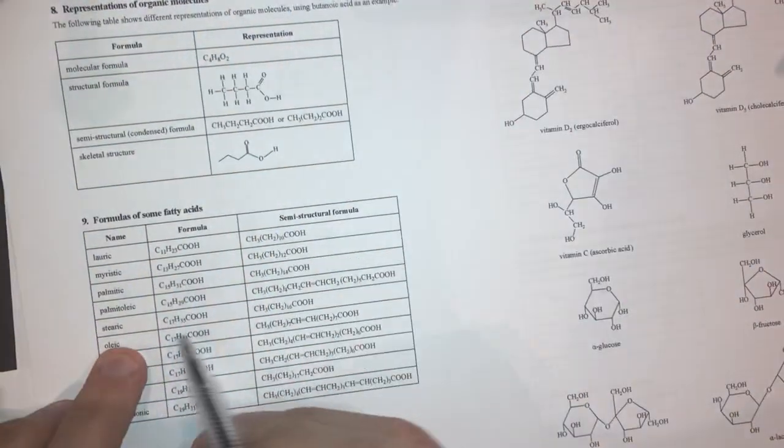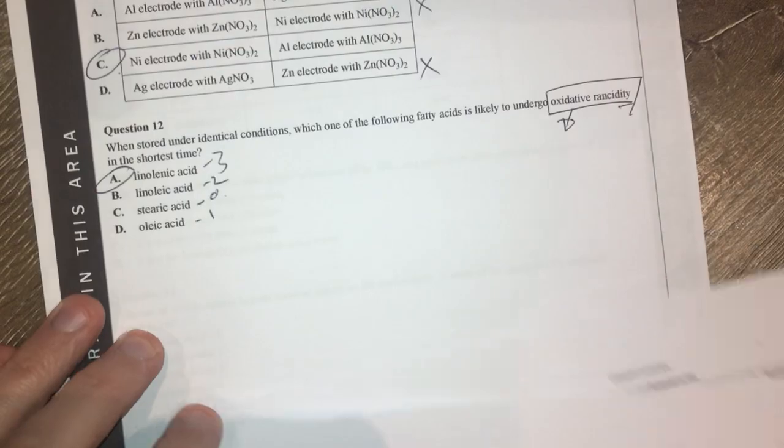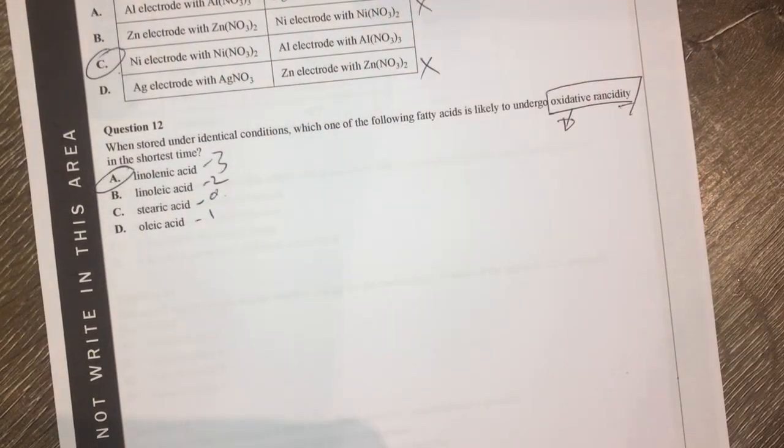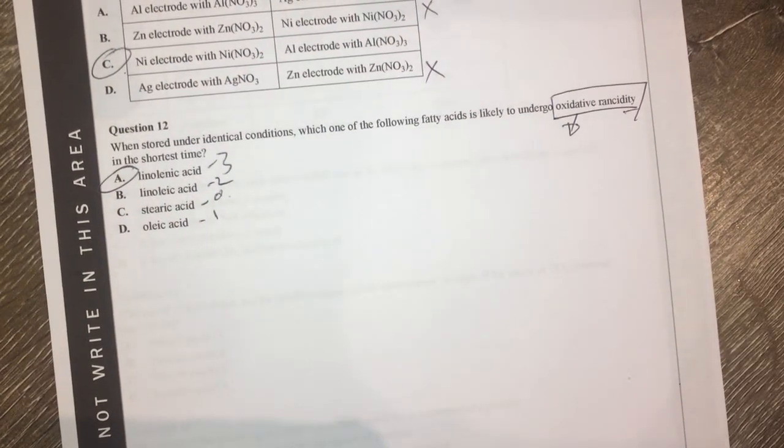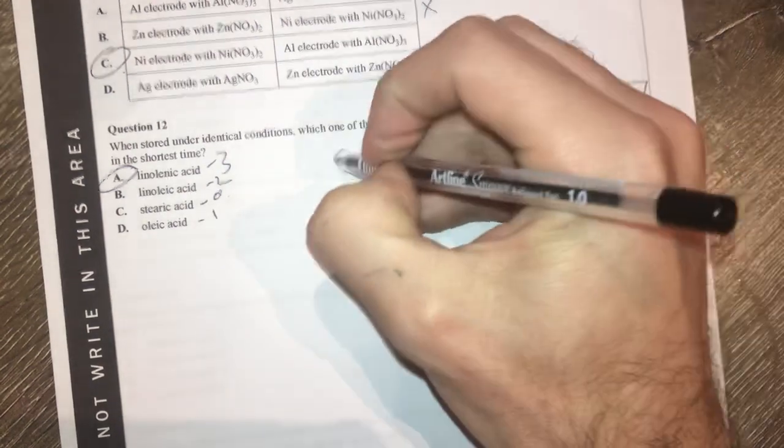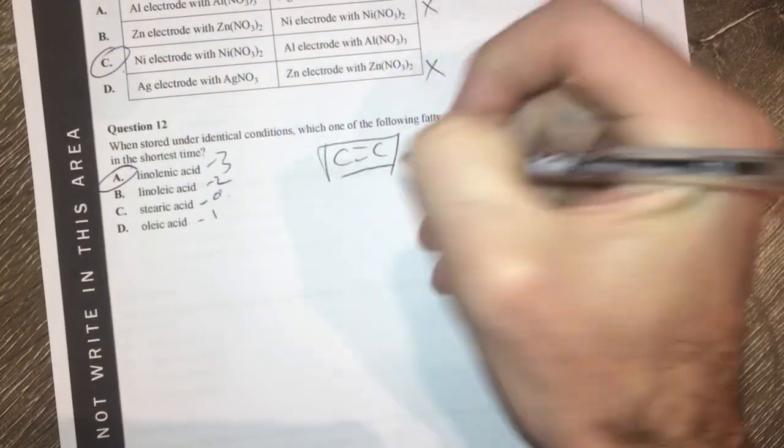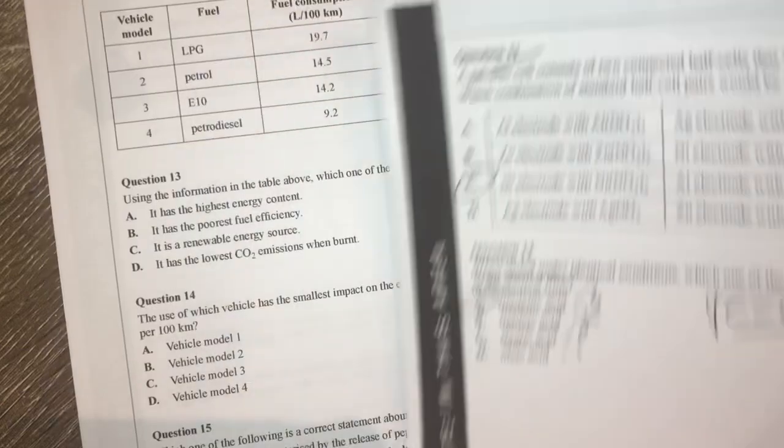Stearic acid, I know, only has zero double bonds. And oleic acid here has only got one double bond. So what that means is for oxidative rancidity, it's going to be A. This guy here because he has the largest number of carbon to carbon double bonds, because that's what oxidative rancidity starts to attack and break down.